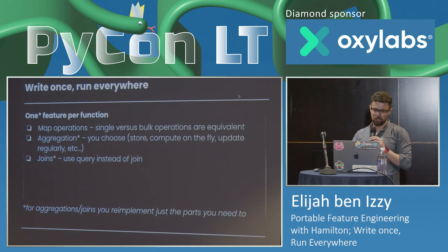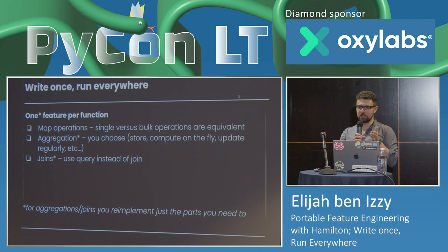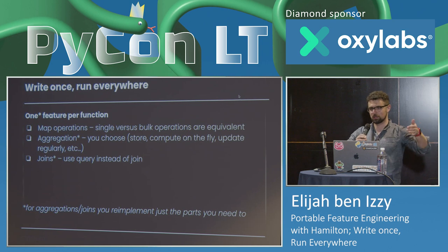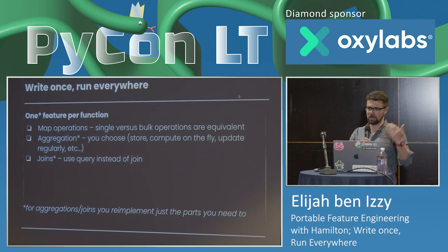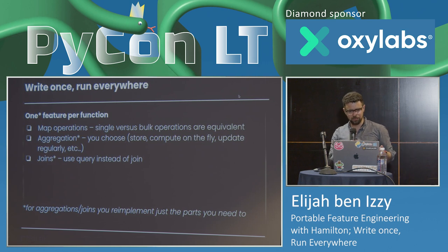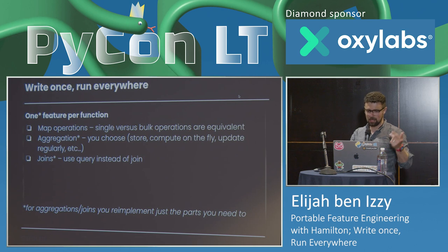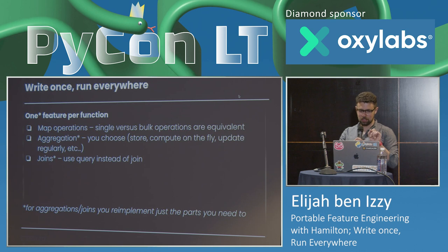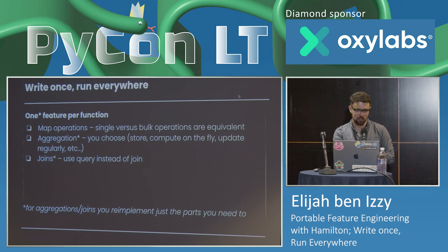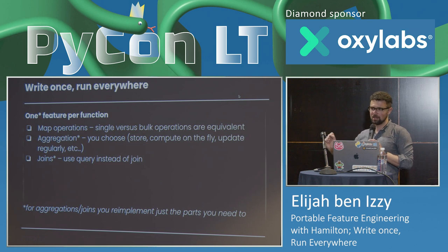So how does this framework help you write once and run everywhere? For the most part, you write one feature per function. For map operations, you do single versus bulk operations that are equivalent — going from large bulk sets you might distribute over Spark to smaller batches or individuals, using vectorized computation engines like pandas series. For aggregations, you choose: store, compute on the fly, update regularly — it all works with Hamilton. For joins, use a query instead of a join. The small pieces you write slightly differently, and the rest you can reuse.